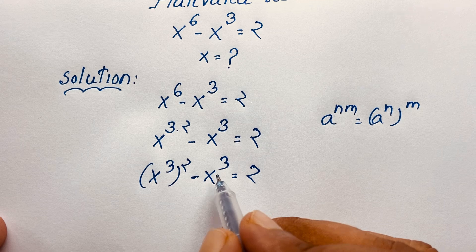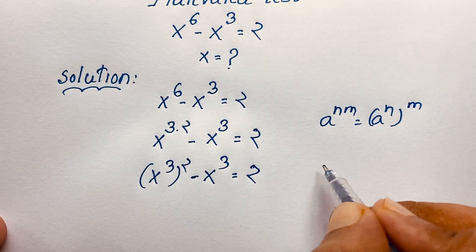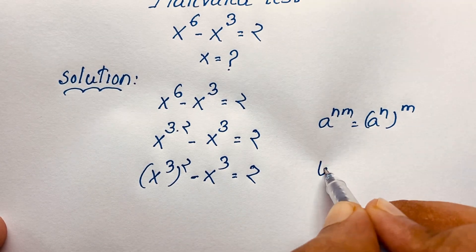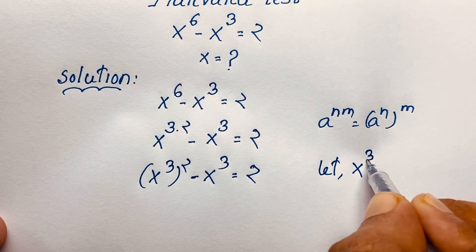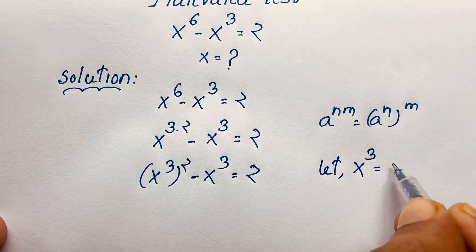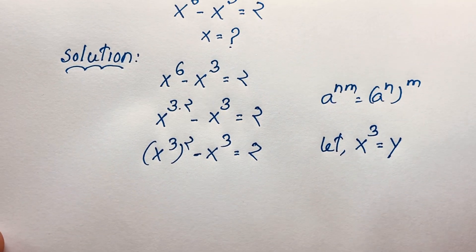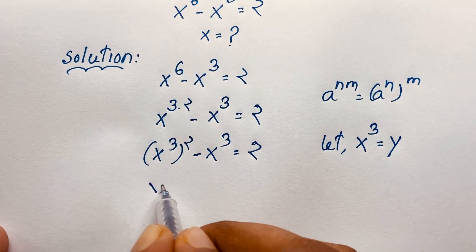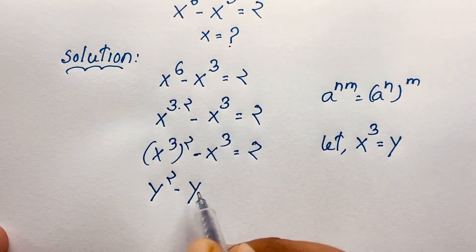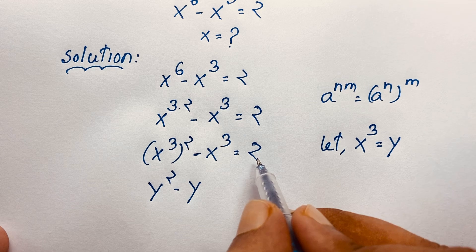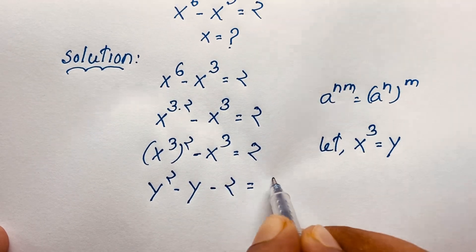Now, this is x to the power 3 and this is x to the power 3 — both are the same. So let x to the power 3 equal y. We let x to the power 3 is equal to y. So you can see it will be y squared minus y, and if I move this to this side, it will be negative 2 is equal to 0.